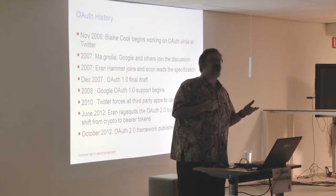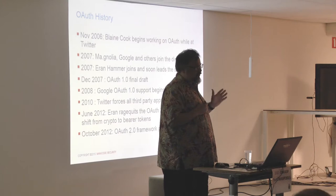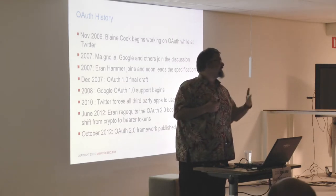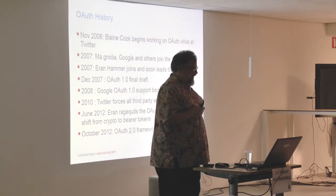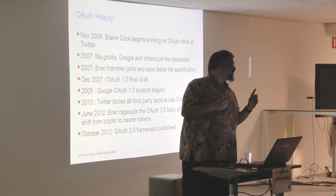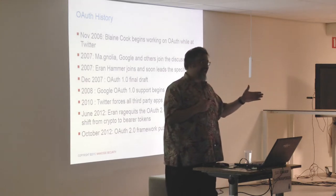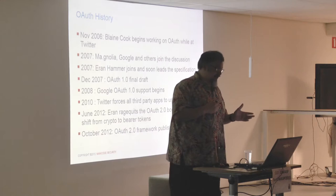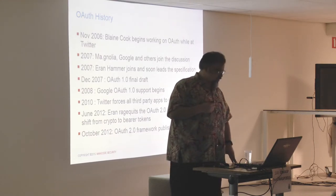In 2007, Magnolia, Google, and others joined the discussion and began forming a publishable document. Aaron Hammer joined, led the specification, and drove the OAuth 1.0 final draft in 2007. At this time, the standard was all about digital signatures — every individual client was given a certificate who then signed every message that was verified at the server level. The problem is: how difficult is it to work with digital signatures across 10 different programming languages in a compatible fashion? That's a huge problem that's not even solved today.